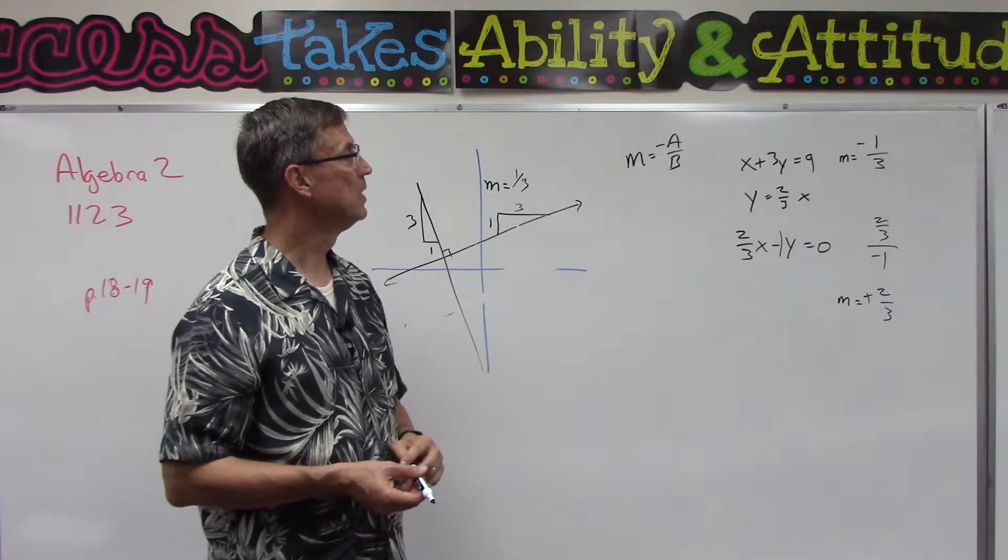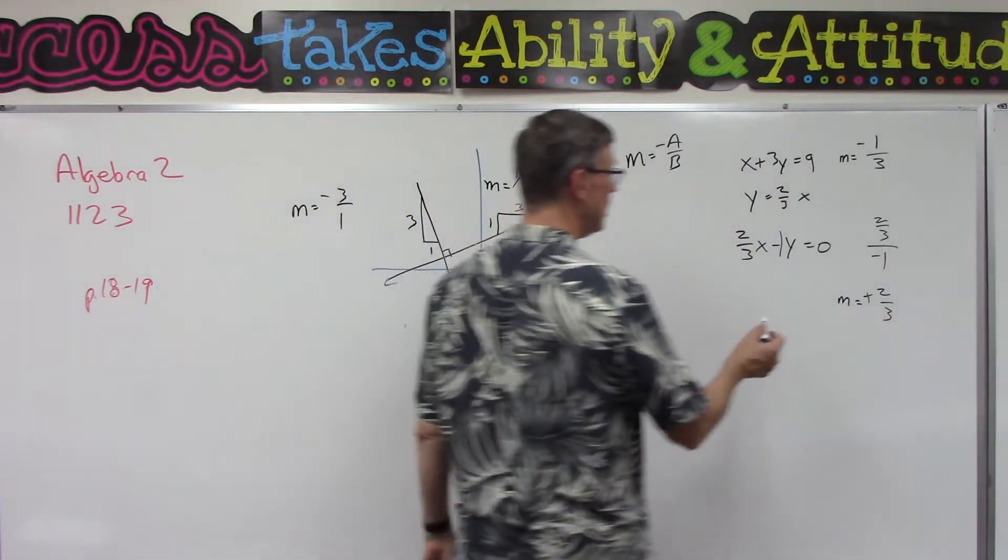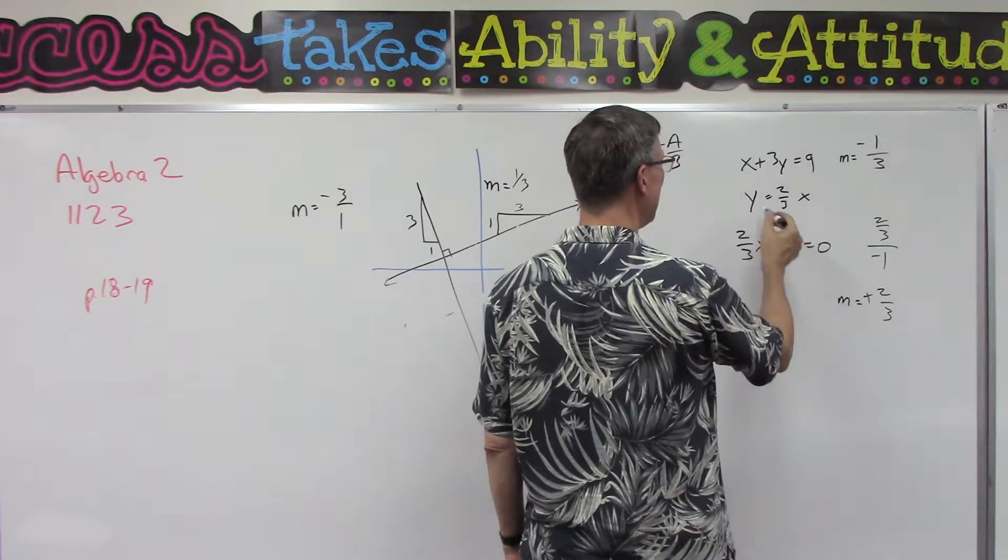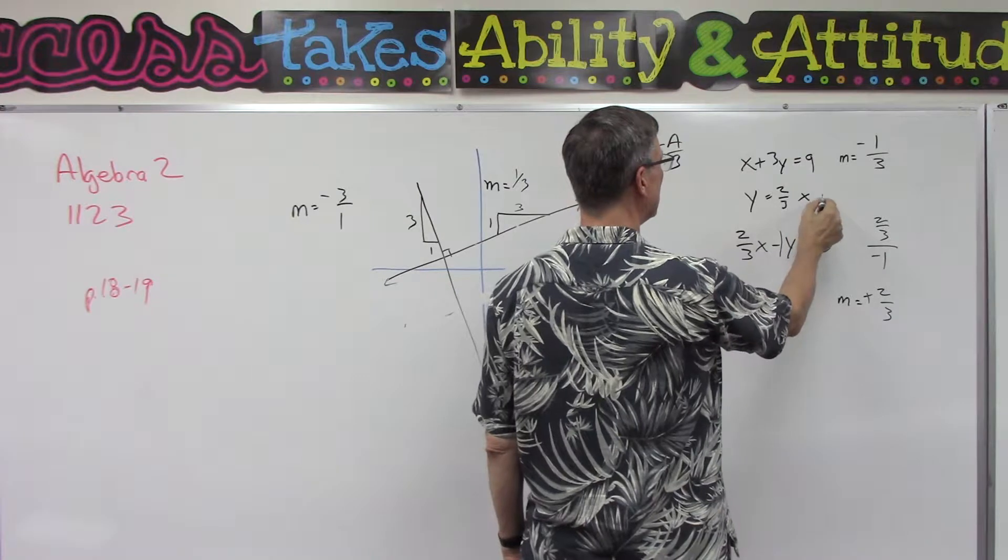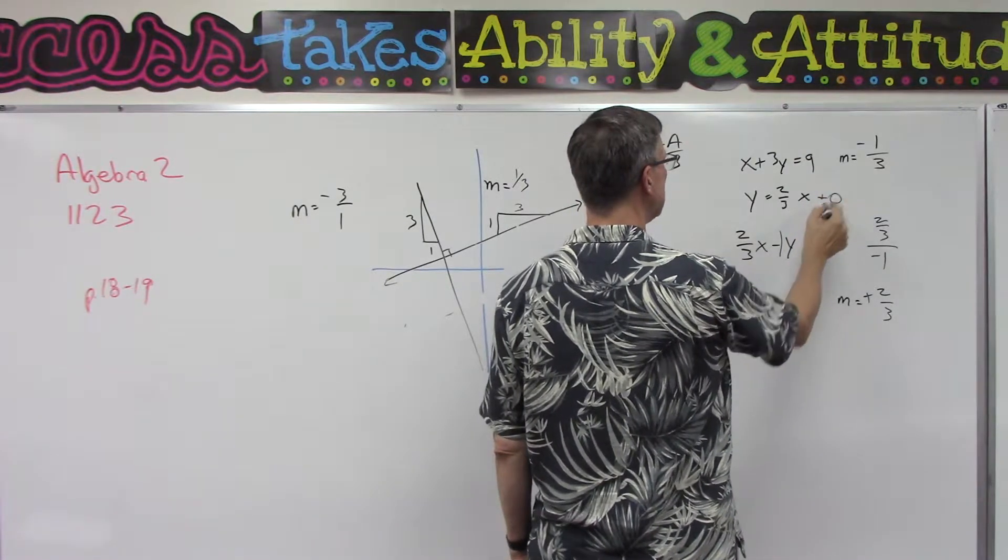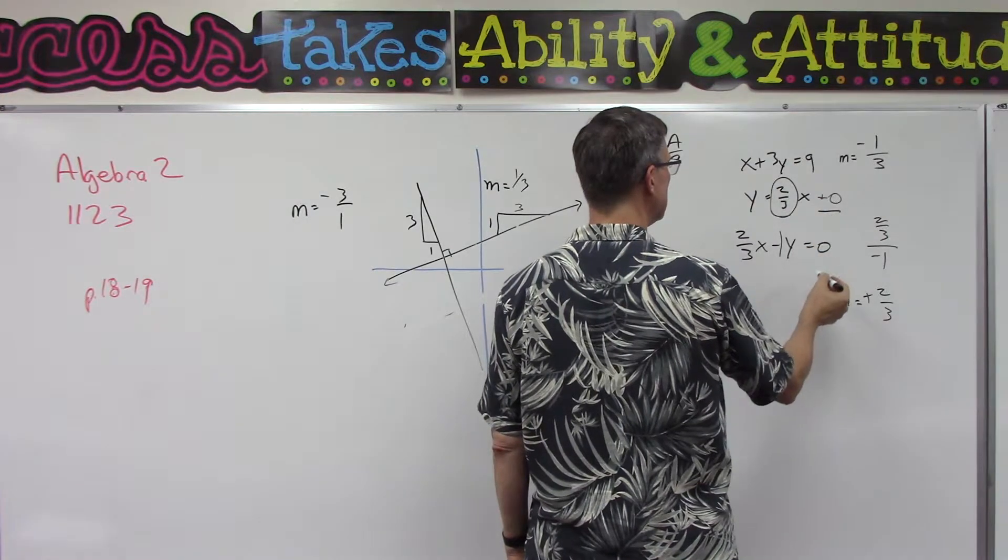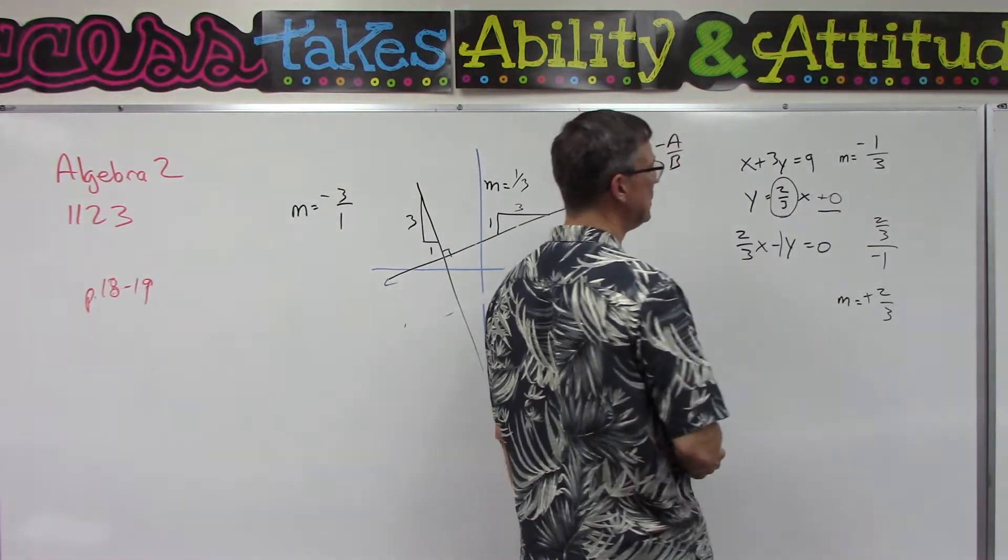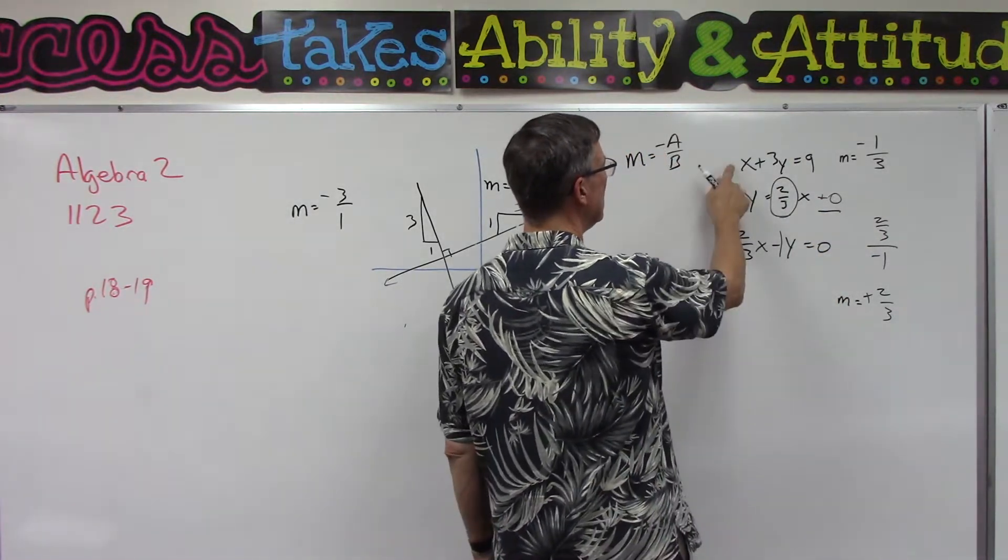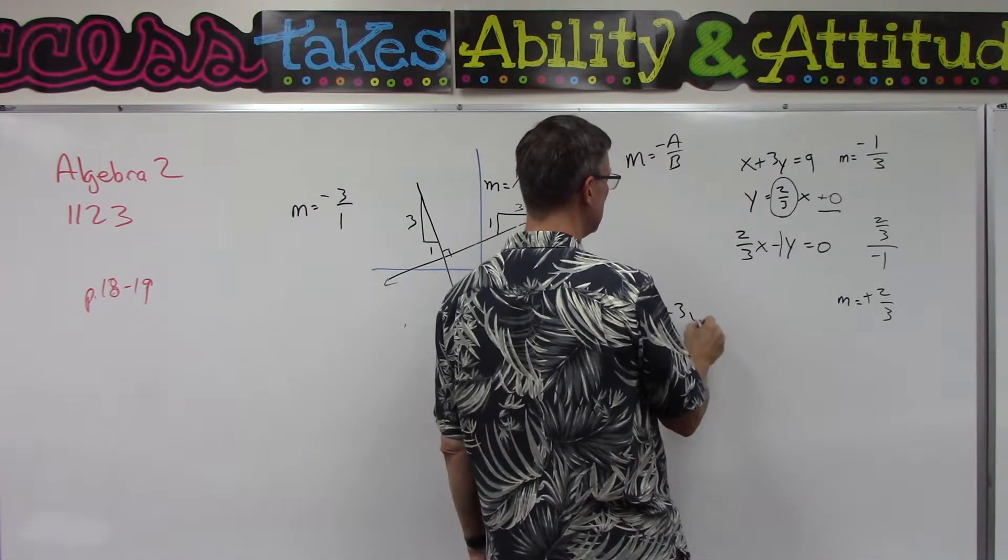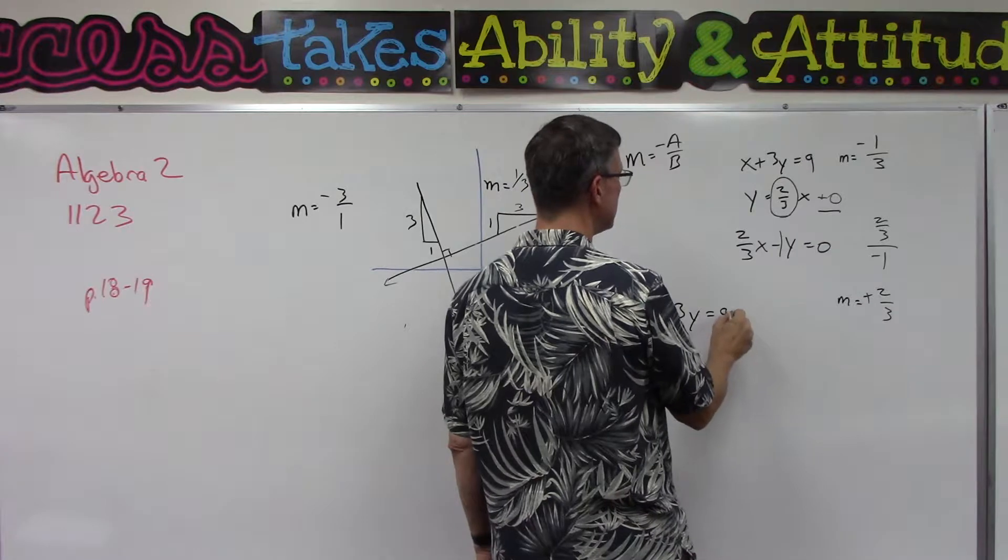Okay, so this one, I like—I mean this is the easiest form right here. You know, mx plus b, which in this case is zero. So here's your slope, two-thirds, it crosses at zero zero, so that was an easy one to graph.